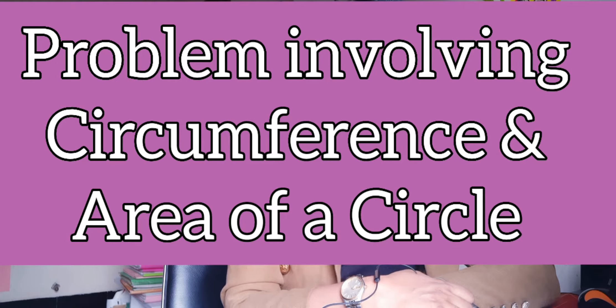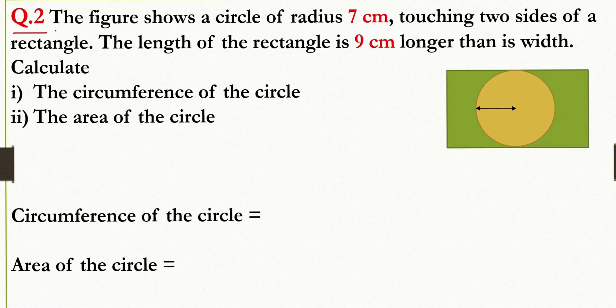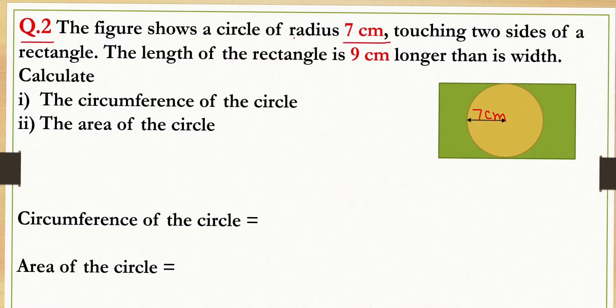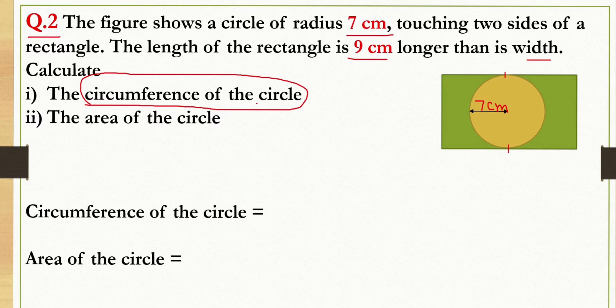In this video I'm going to teach you problems involving circumference and area of a circle. The figure shows a circle of radius seven centimeters touching two sides of a rectangle. The length of the rectangle is nine centimeters longer than its width. You need to calculate: number one, the circumference of the circle; number two, the area of the circle; and number three, the area of the shaded region.